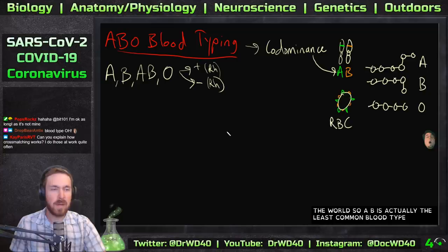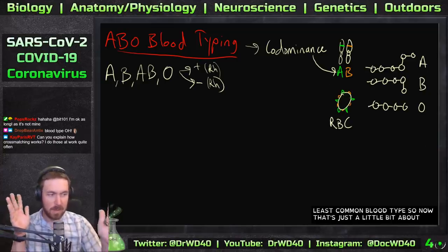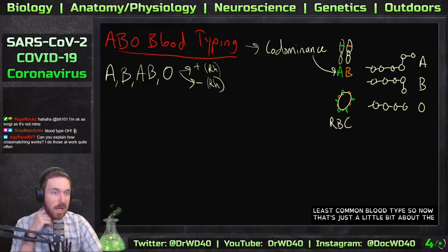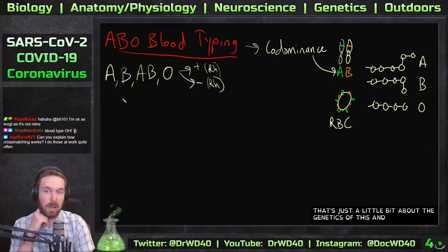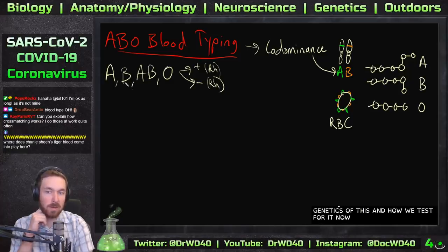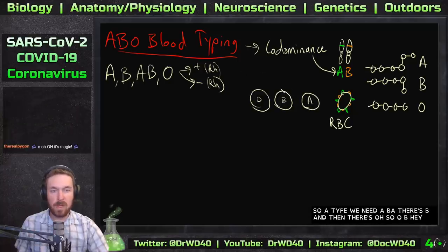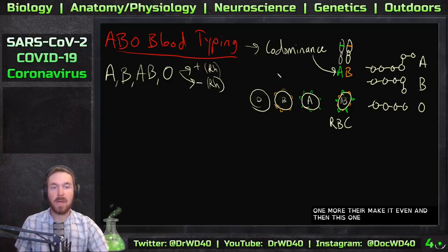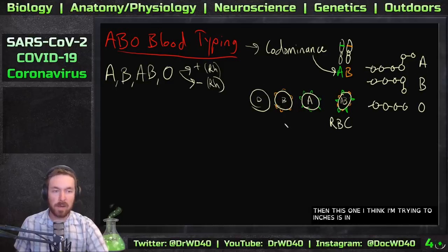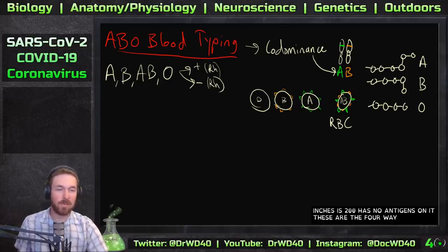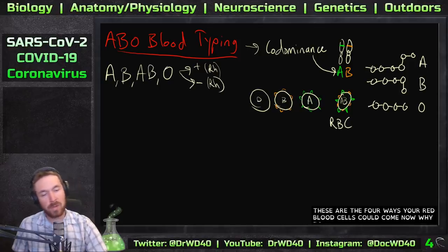So to summarize the genetics: B type has B antigens, A type has A antigens, and O has no antigens on it. These are the four ways your red blood cells can look. Now, why do you accept one blood type and not another?